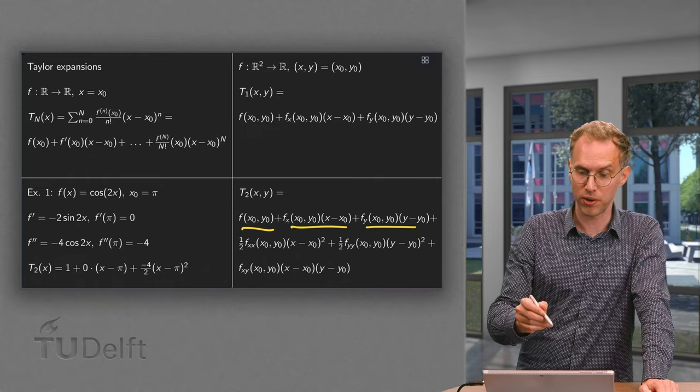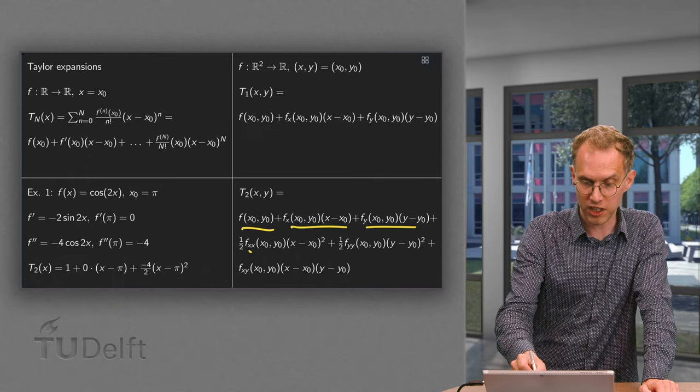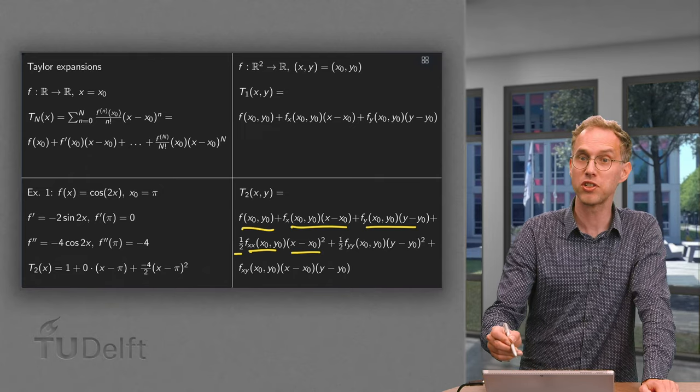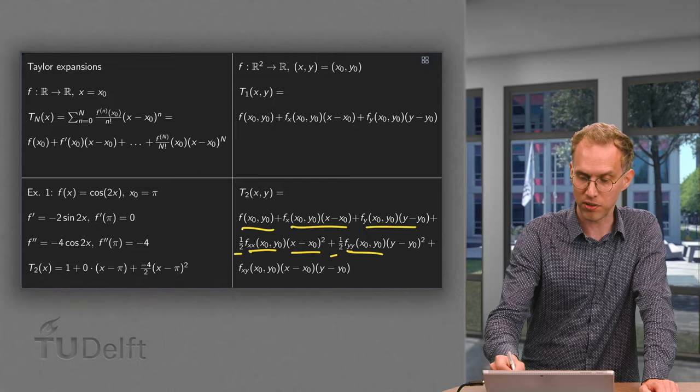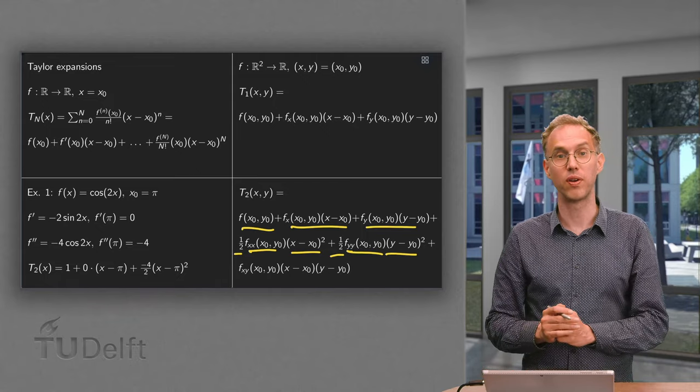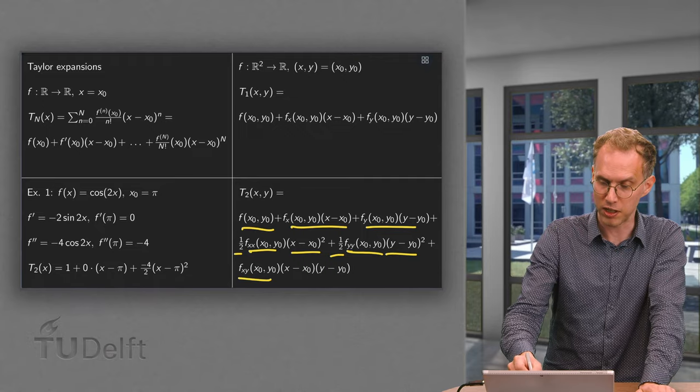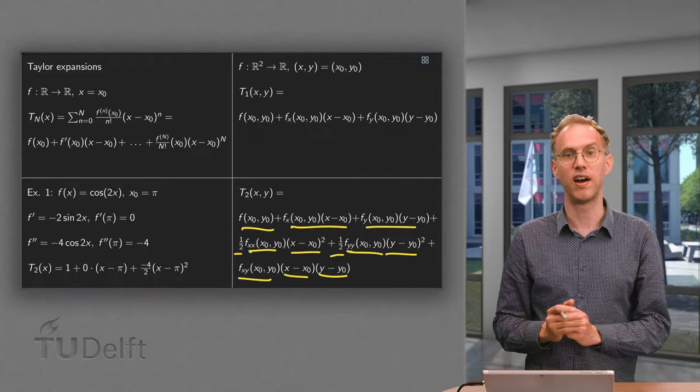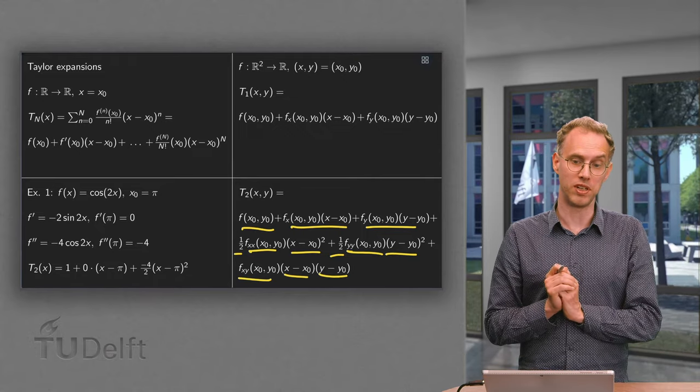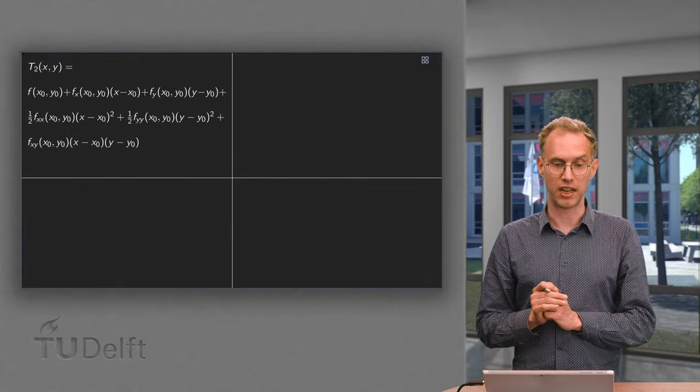And then we get some second order terms. The fxx times 1/2 times (x - x₀) squared, plus the fyy times 1/2 times (y - y₀) squared, and also a mixed derivative term, fxy times (x - x₀) times (y - y₀). So that's how you compute these. Let's do an example.